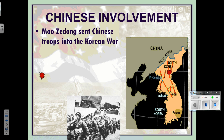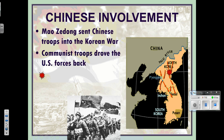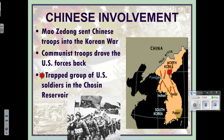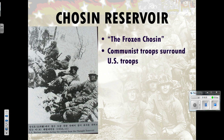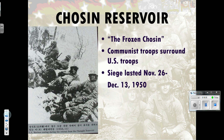Mao Zedong sent Chinese troops into the Korean War, driving US forces all the way back beyond the 38th Parallel. A group of our soldiers got trapped at the Chosin Reservoir — otherwise known as the Frozen Chosin. It was a terrible moment in terrible weather: 30 below zero with wind chill. Communist troops surrounded the US forces in a siege from November 26th through December 13th of 1950.